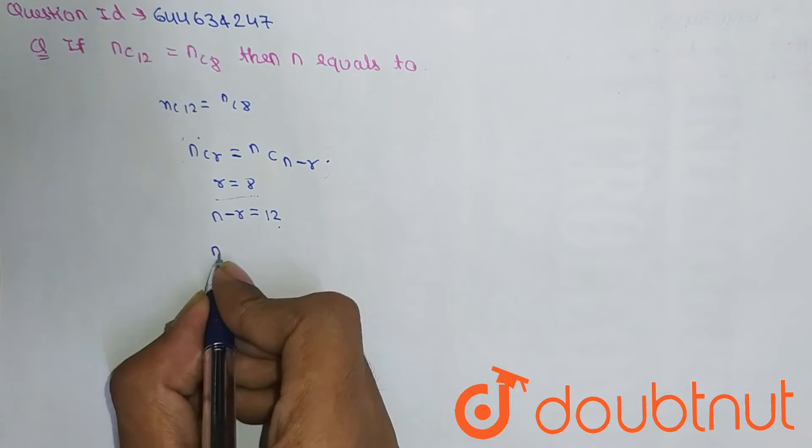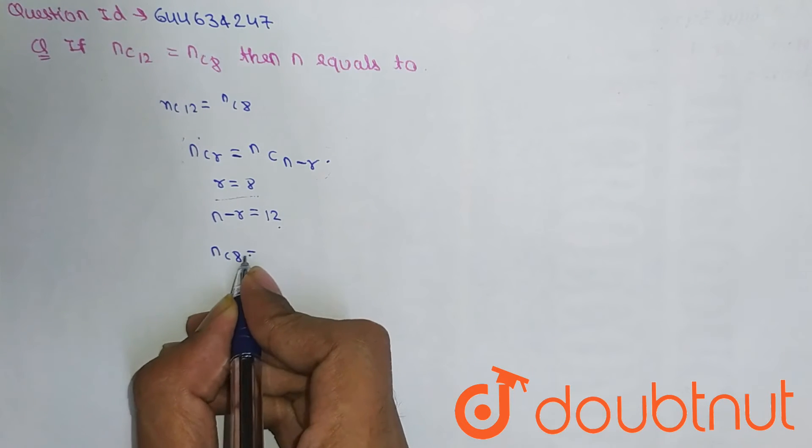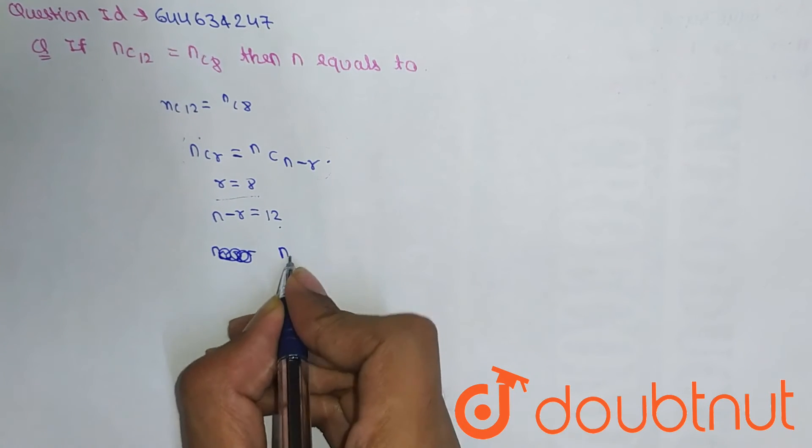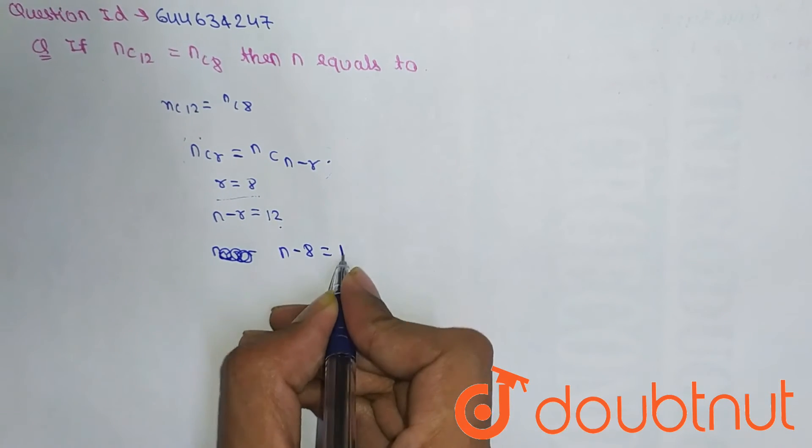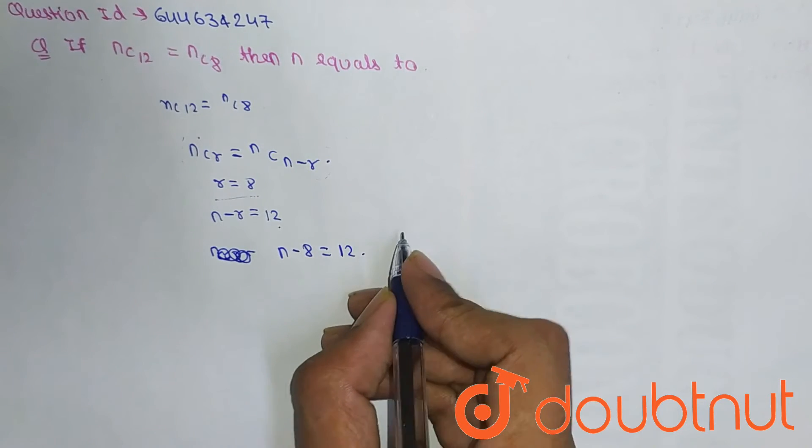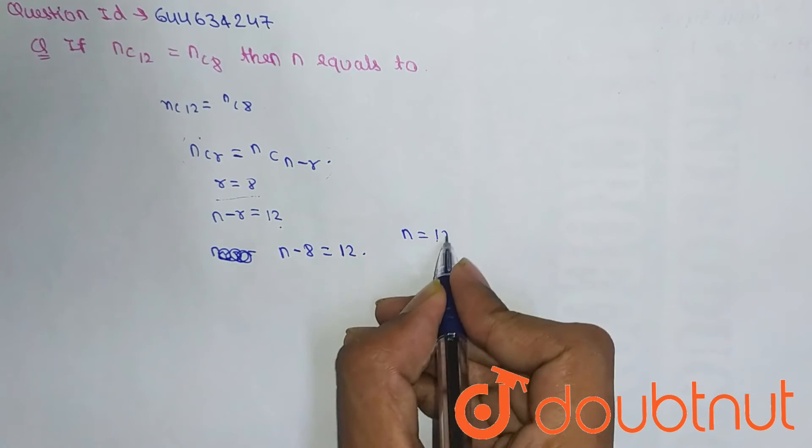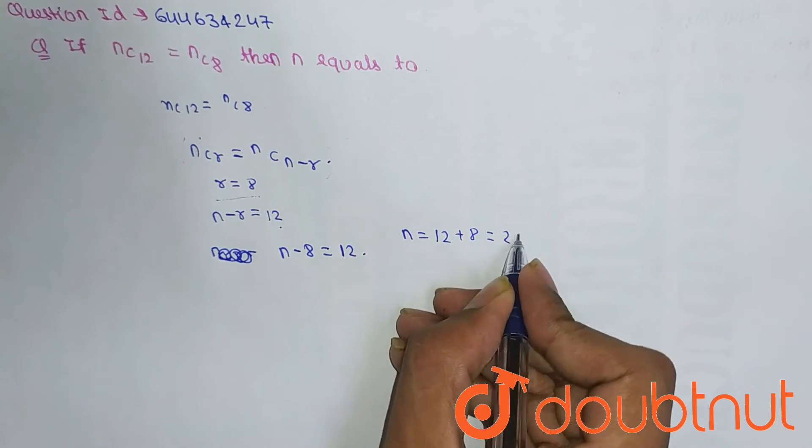So n-r means n-8 equals 12. From here, we get the value of n: n equals 12 plus 8, which equals 20.